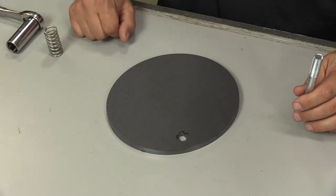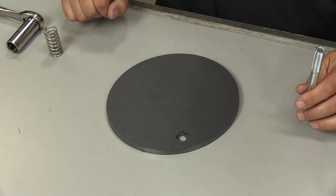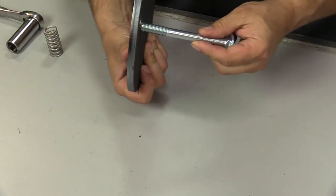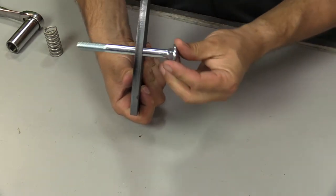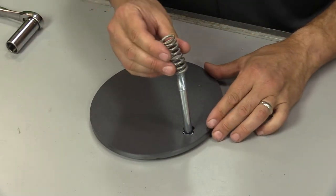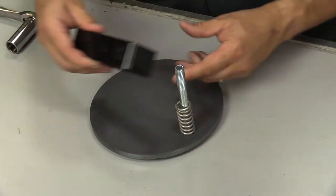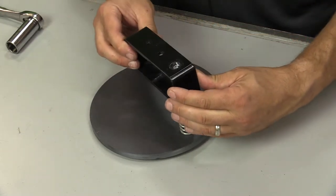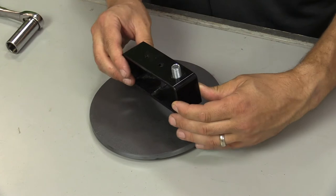We're now ready to begin by attaching the target brackets to the targets. Begin by inserting one of the carriage bolts so it is flush against the face of the target, then place the target face down holding the carriage bolt in place. Place the spring on top of the bolt followed by the bracket. Make sure to note that the two holes on the bracket are for the wood leg screws and they need to be facing the back of the target.